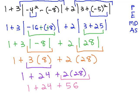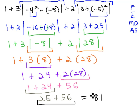And then finally, we can add and subtract from left to right to get 25 plus 56 equals our final solution, 25 plus 56 is 81.